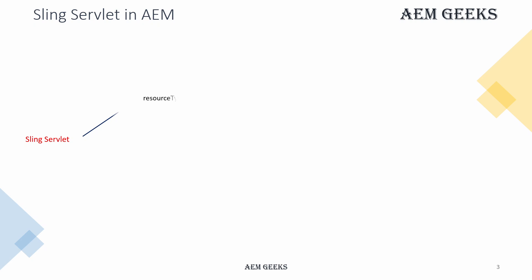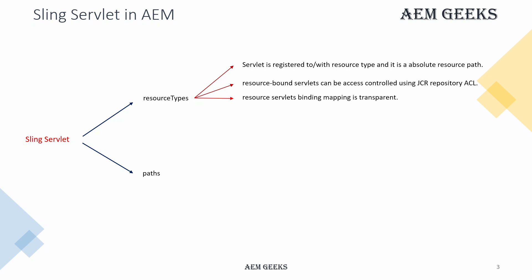When you write a servlet in AEM, there are two ways: you can bind that servlet to a particular resource or a particular path. Resource type is the preferred way. There are a few advantages, like you can register that servlet with a resource and its absolute path. This servlet is also access-controlled using the JCR repository, meaning that because the servlet is bound to a resource, you can only access it if you have access to that resource.